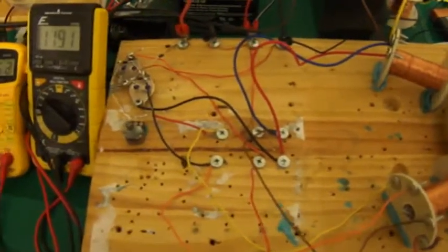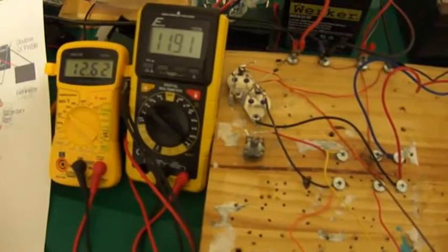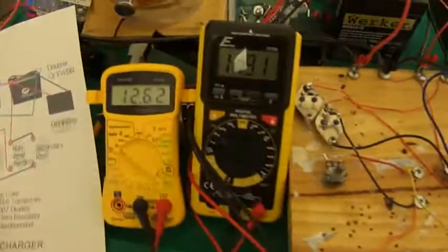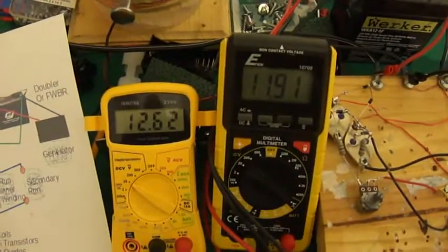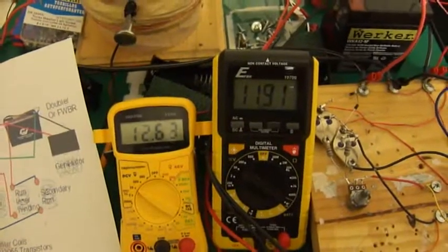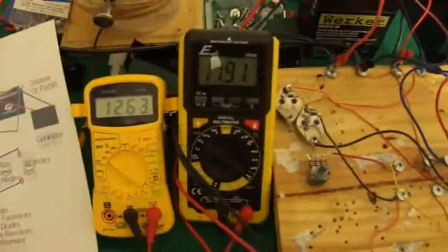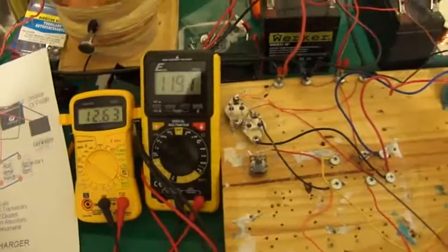Once I get it timed, I'll have to set the tuning to where it works a little better. We're now at 12.62 going to 12.63, and it looks like we're holding at 11.91 on the run battery.